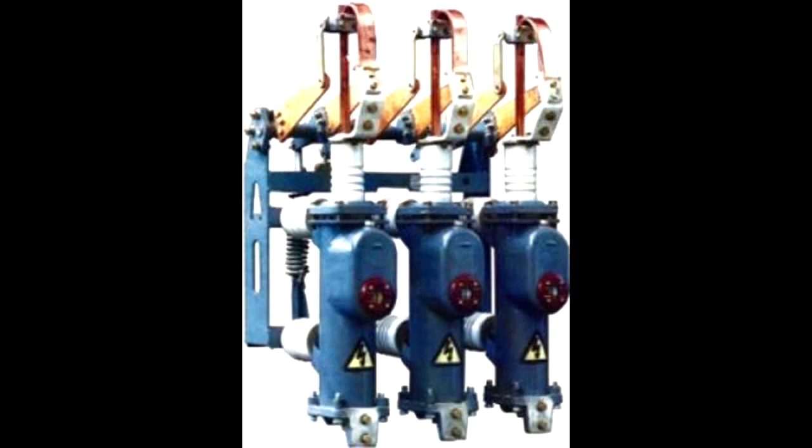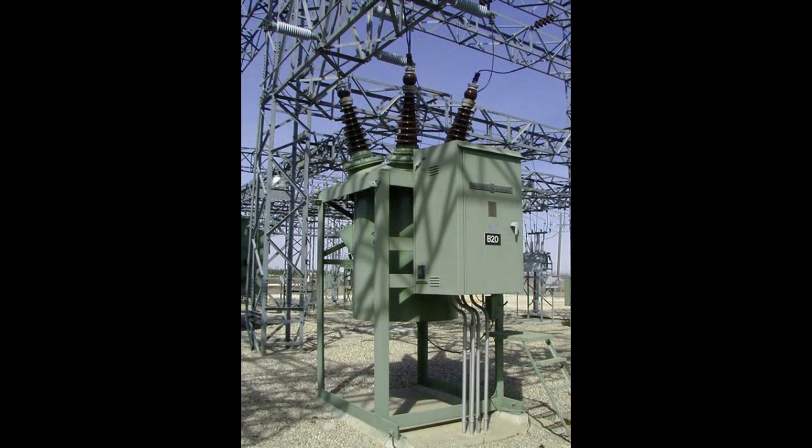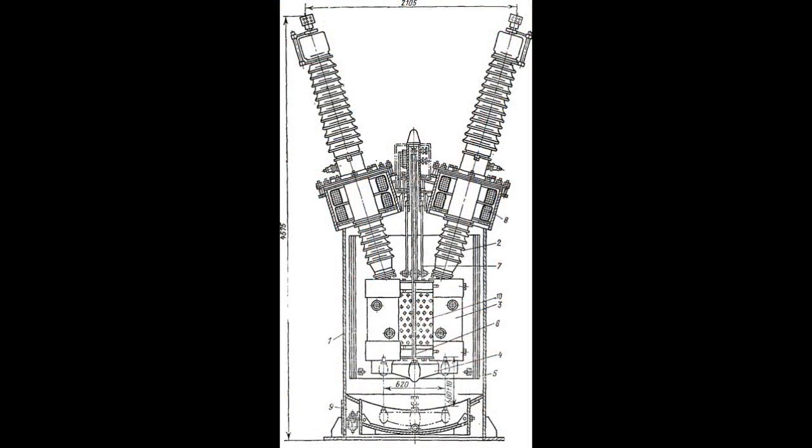There are two types of oil circuit breakers differentiated by their design: tank type and low oil content circuit breakers. Tank type circuit breakers consist of inputs, contacts, and arc suppressing systems placed inside a tank filled with oil.